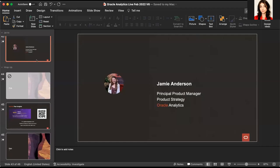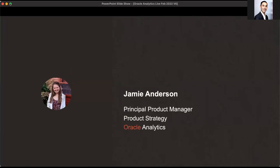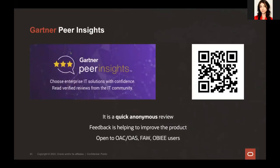Moving to Q&A. Before questions, please take a moment to fill out an anonymous survey — use the QR code on screen — to let us know what you think of OAC, OAS, FAW, or OBIEE. Your feedback is taken to heart to improve the product.